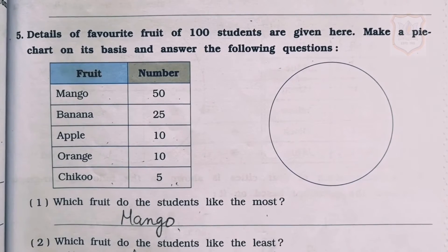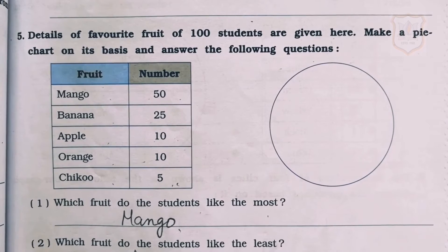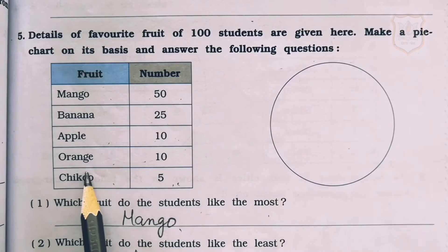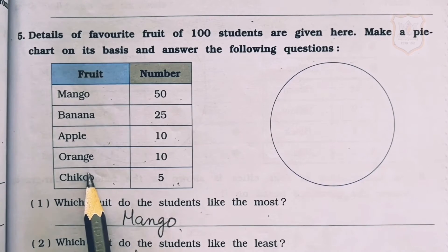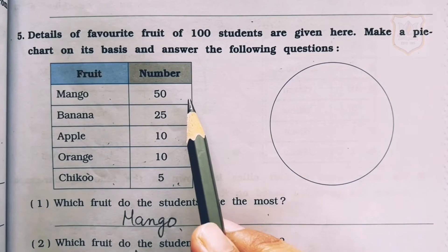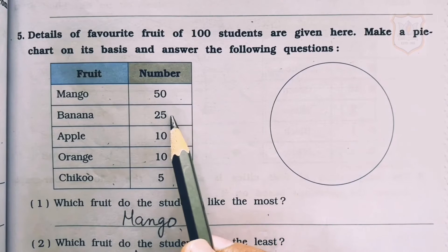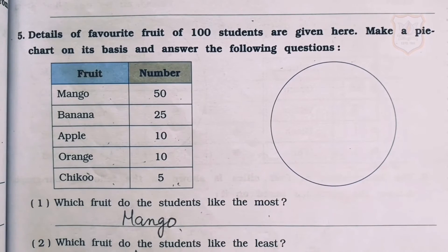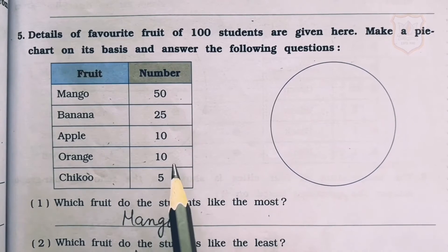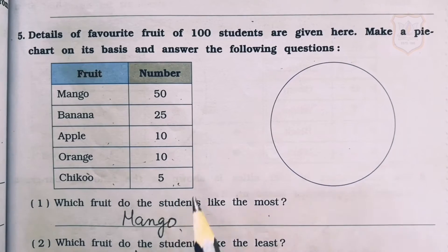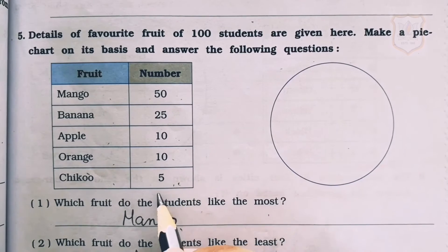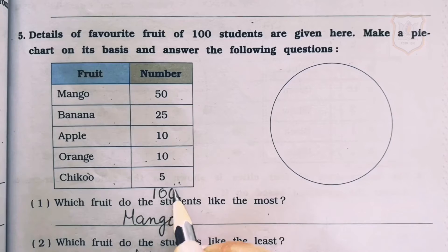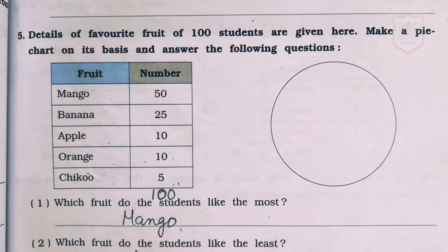Now students, we have to make a pie chart on the basis of the information given. First we will find the total number. 50 plus 25 is 75, plus 10 is 85, plus 10 is 95, plus 5 is 100. So the total number of students is 100.